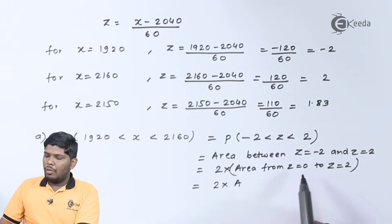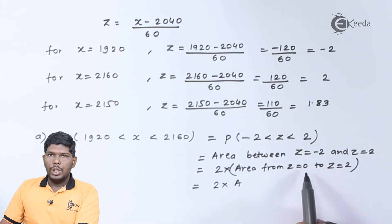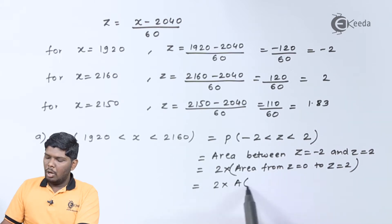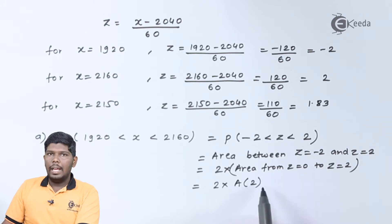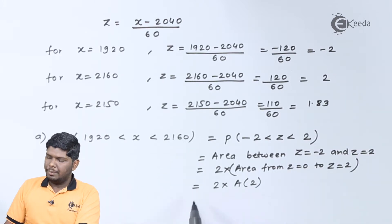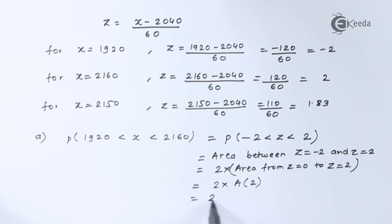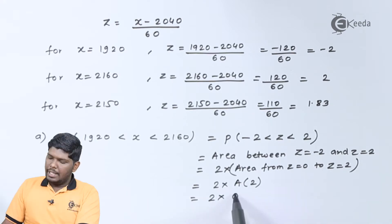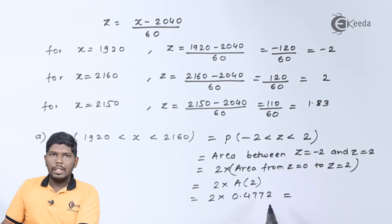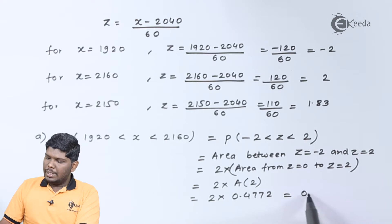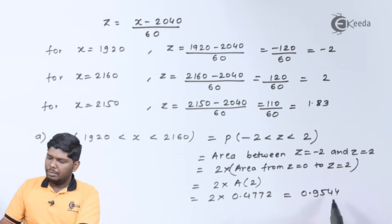The probability P(−2 < z < 2) = 2 × A(2), and A(2) is already given as 0.4772. Multiplying by 2 gives the final answer 0.9544.